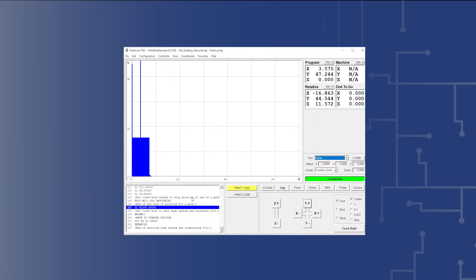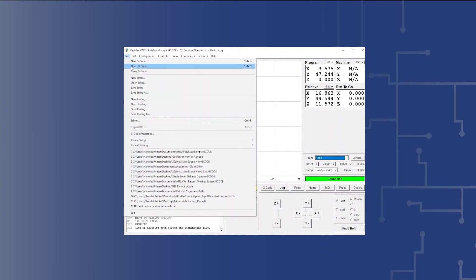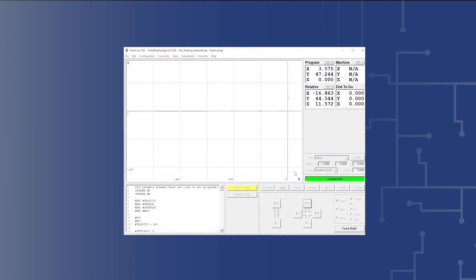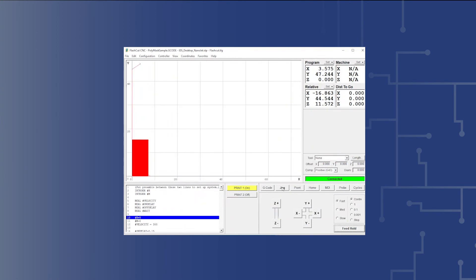To begin printing, select the flash cut CNC GUI. Select the G-code toggle switch on the front screen and open a G-code program from the sample programs provided with the system. Once a G-code program is loaded, position the print tip to the position where the printing is to begin on the substrate.